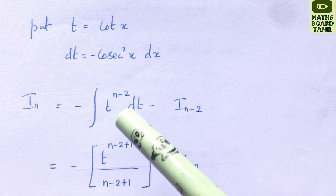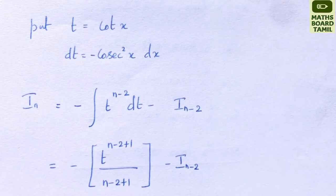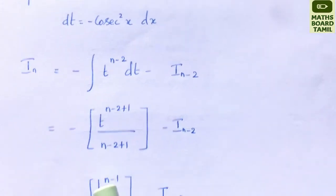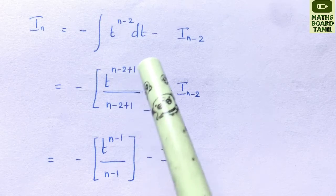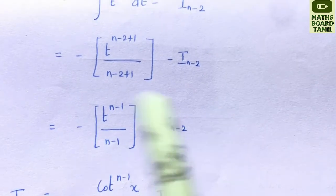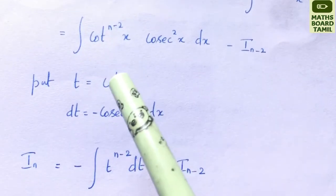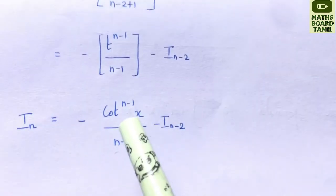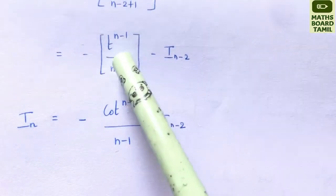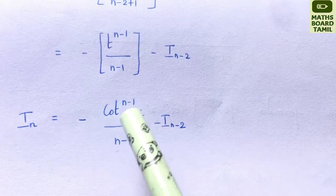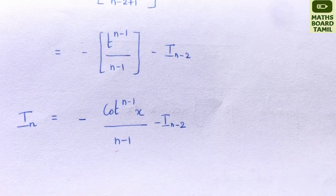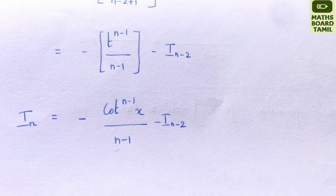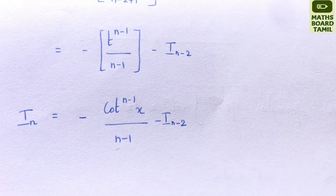We integrate x power n as x power n plus 1 divided by n plus 1. So, minus t power n minus 2 plus 1 divided by n minus 2 plus 1, minus I sub n-2. This simplifies to minus t power n minus 1 divided by n minus 1, minus I sub n-2. Replacing t with cot x: minus cot power n-1 x divided by n-1, minus I sub n-2. This is the integration reduction formula. Please like, comment, share, and subscribe to the MaxBoard Tamil channel. Thank you.